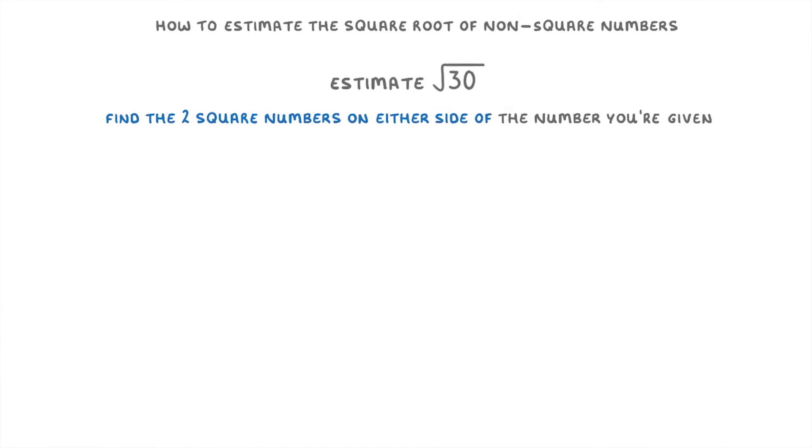Let's try another one. This time we're looking for the square root of 30. We need to recall that 5 squared is 25 and 6 squared is 36.